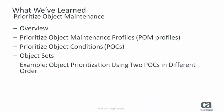In this video, we introduced the CA Database Analyzer Prioritize Object Maintenance feature. We learned how each POM profile contains Prioritize Object Conditions, and that the order of the selected conditions and their values determine the order of the JCL. We also learned about Object Sets, and finally, we reviewed an example of how using the same two POCs in different order impacts how objects are prioritized.